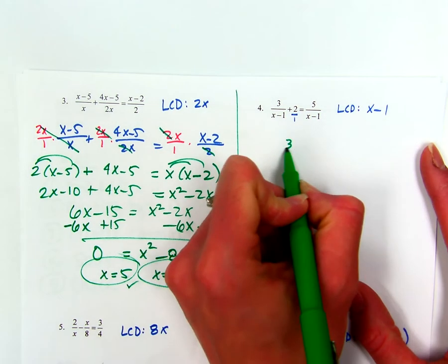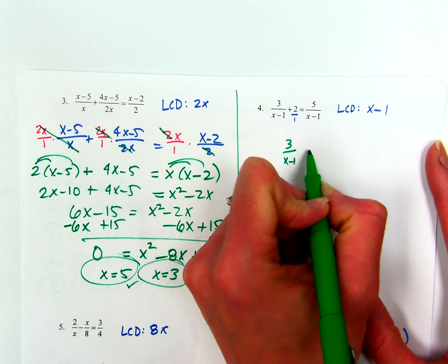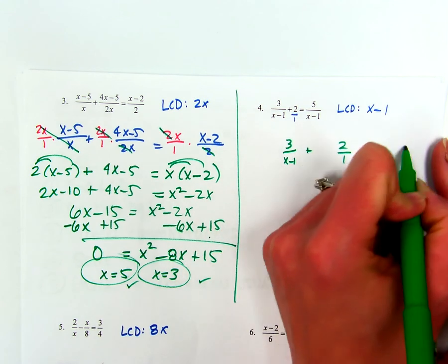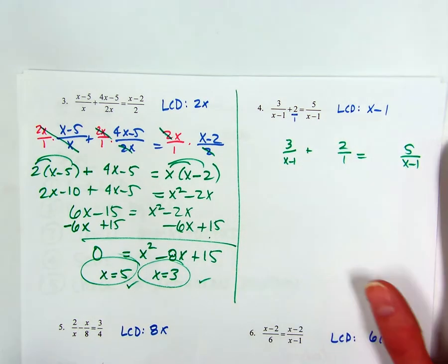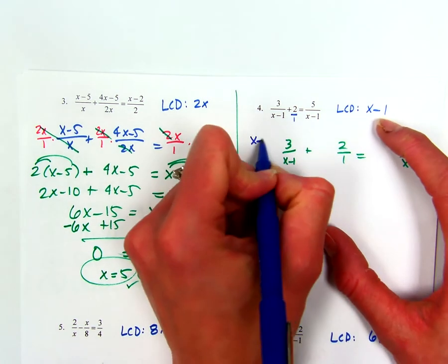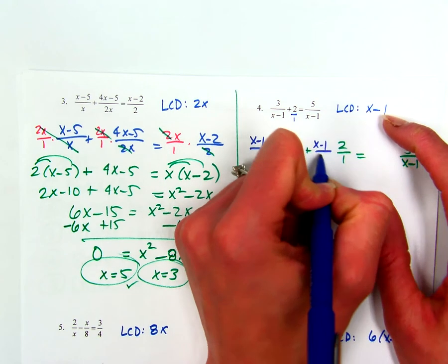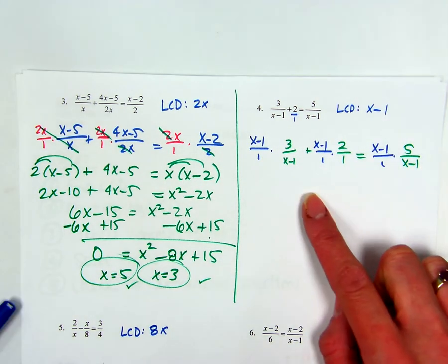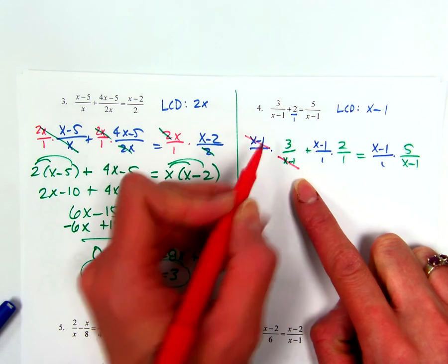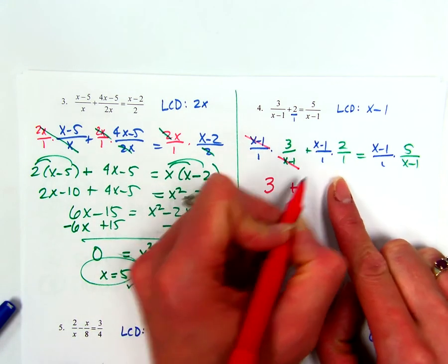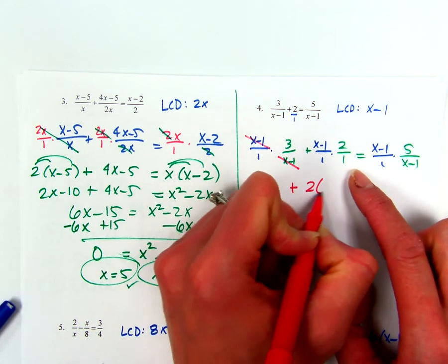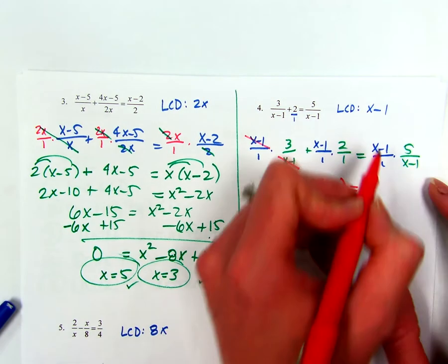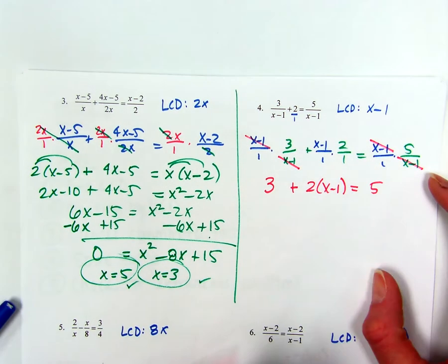All right, problem 4. So we have 3 over X minus 1 plus 2 over 1 equals 5 over X minus 1. My LCD is X minus 1. So I'm multiplying each fraction by X minus 1. Look for things that cancel. All right, 3 over 1 is just 3. Nothing cancels here, so we have 2 times X minus 1. Here, my X minus 1 is cancel and I'm left with 5.